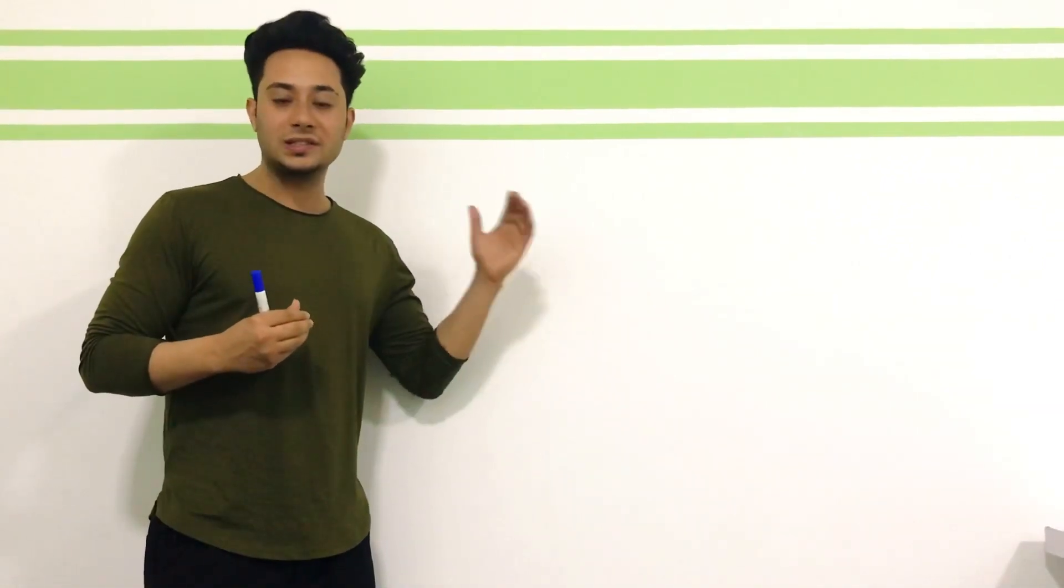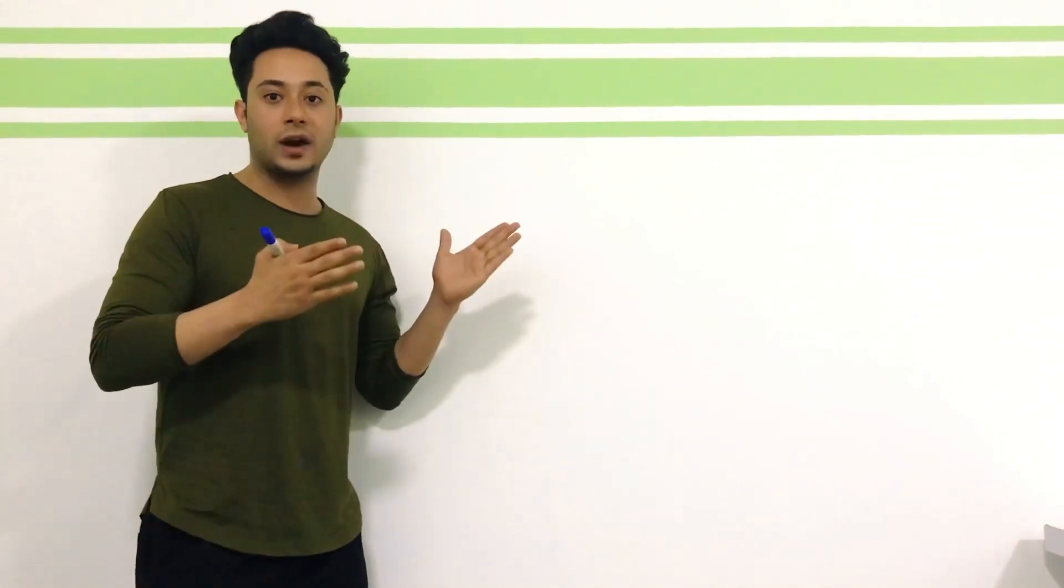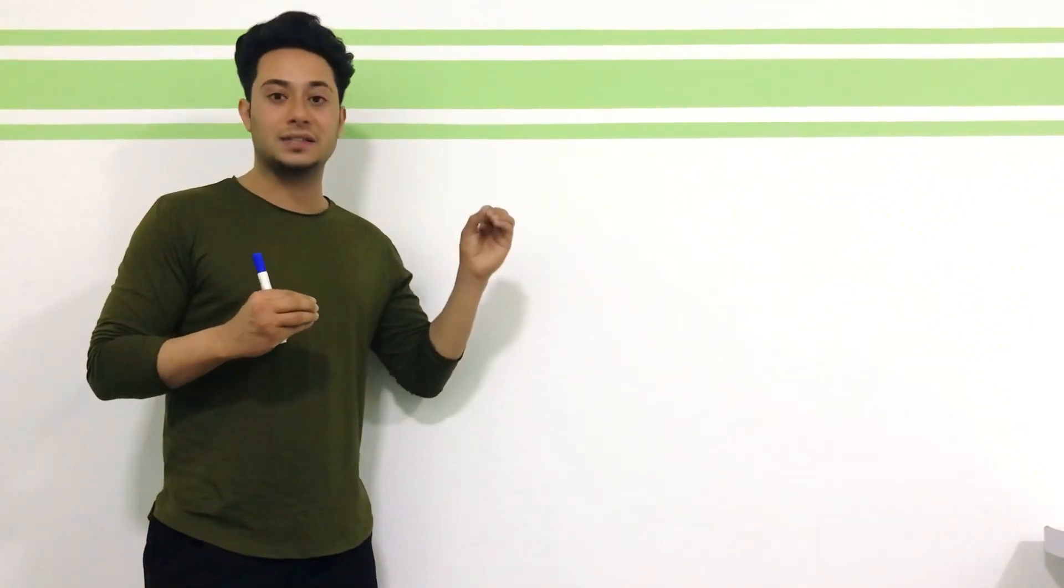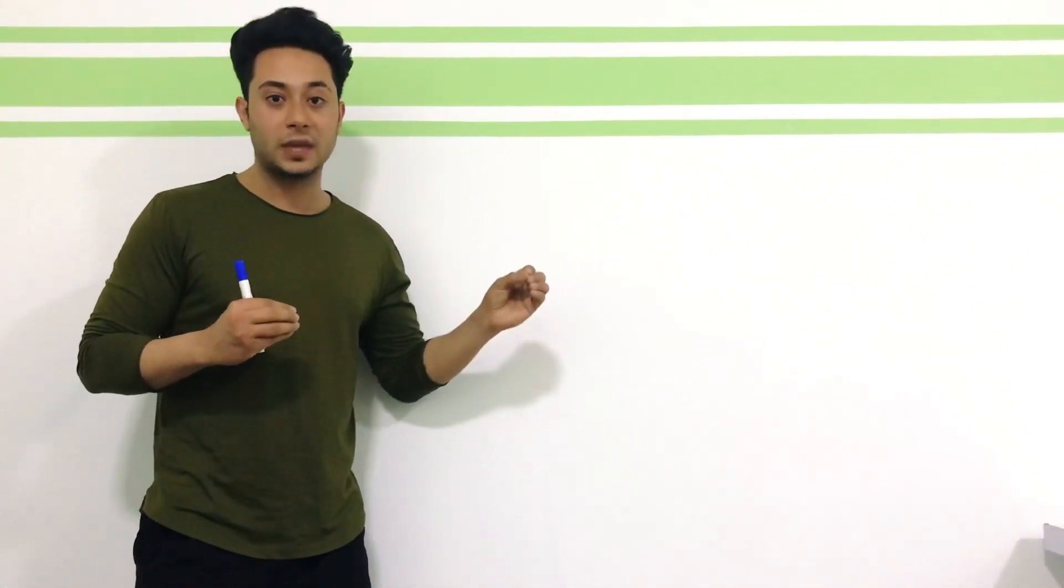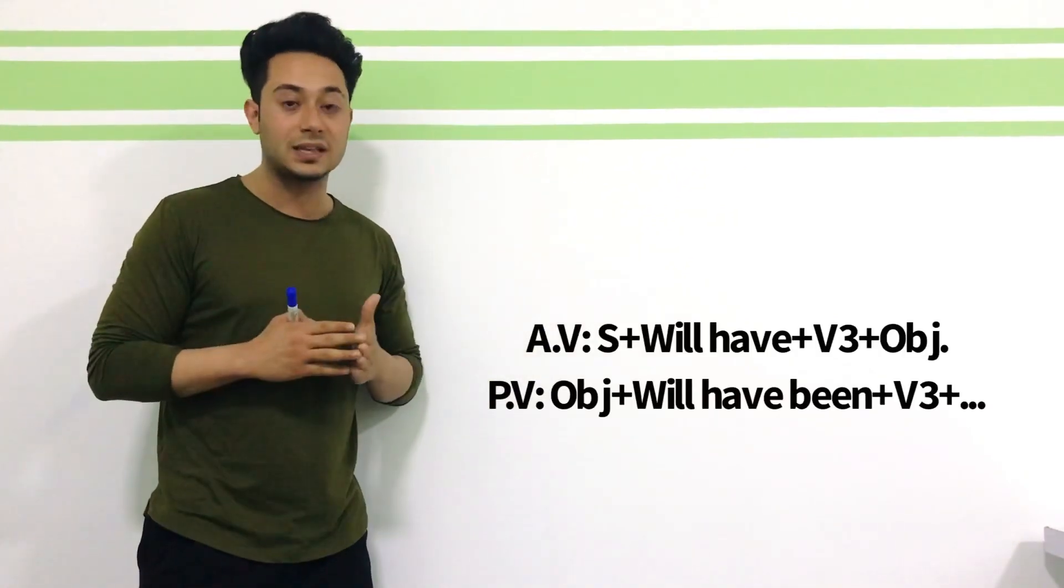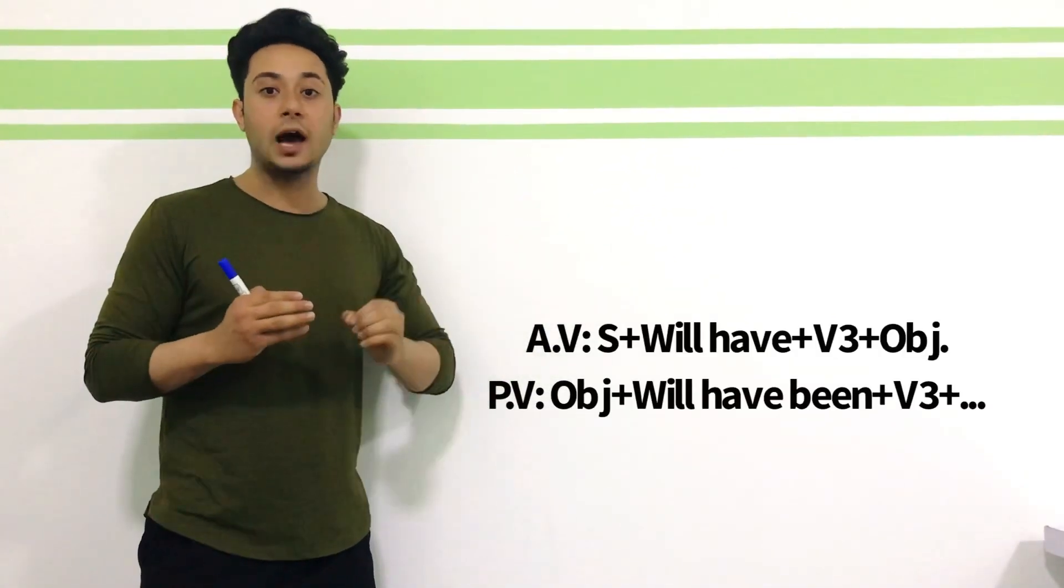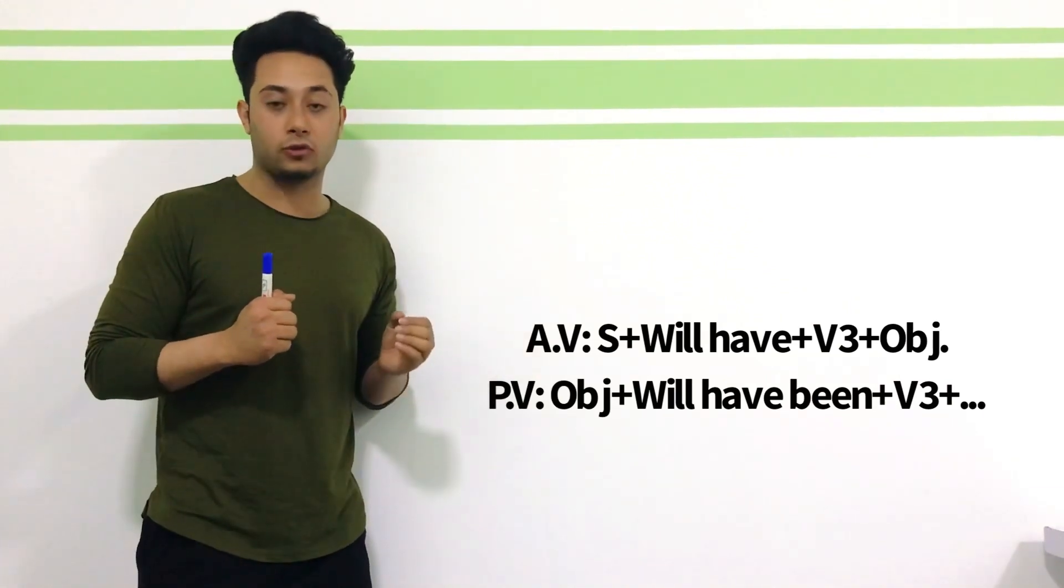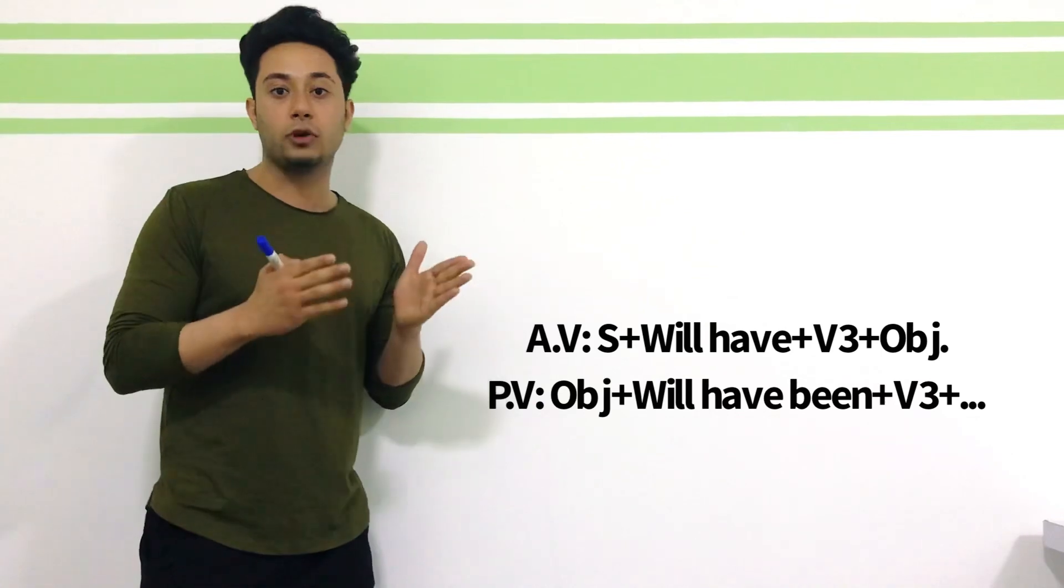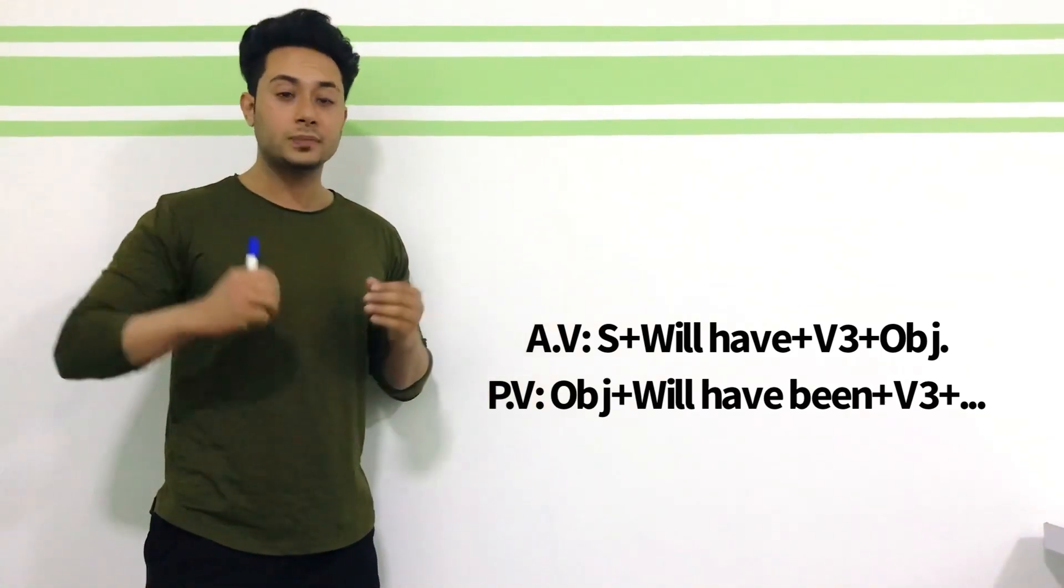You know, all friends, simply we can change the structure or the sentences from active voice to passive voice in future perfect tense. But first, we need to know what is the structure in future perfect tense active voice. The active structure in future perfect tense is subject plus will plus have plus past participle form of the verb plus an object or plus an adverb of time at the end of the sentence.